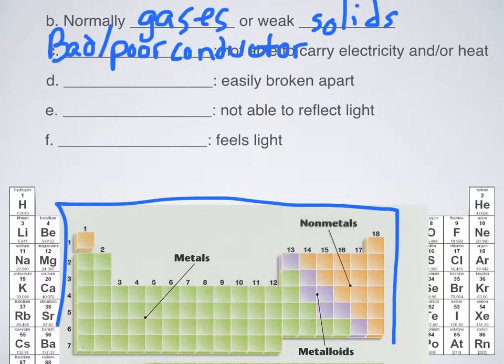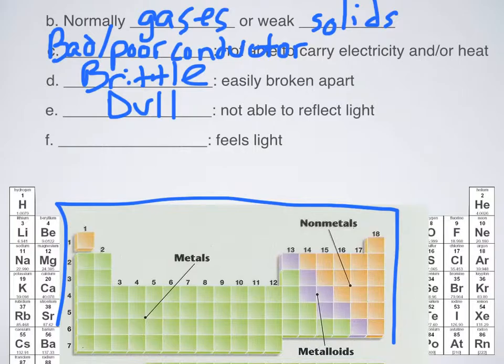We have that they're easily broken apart. So if they are a solid, they're going to be easily breakable. Obviously, with the exception of diamond. But they're very brittle. And so that's the term we're going to use. Not able to reflect light. That would be dull. The opposite of lustrous. And they feel very light because they are low density. And those are the real differences between metals and non-metals.